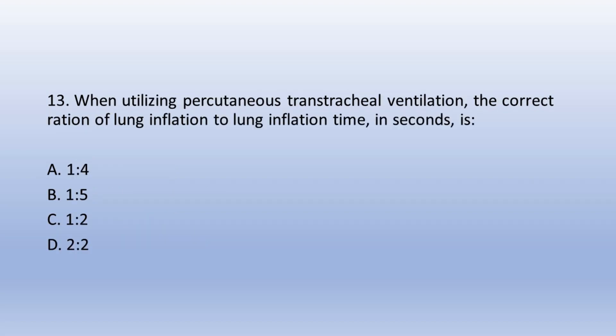Question 13. When utilizing percutaneous transtracheal ventilation, the correct ratio of lung inflation to lung deflation time in seconds is: A. 1 to 4, B. 1 to 5, C. 1 to 2, D. 2 to 2. The answer is A. 1 to 4.